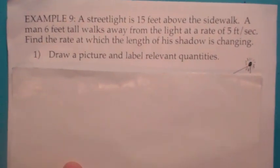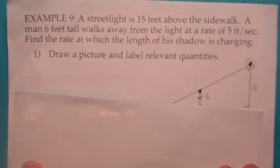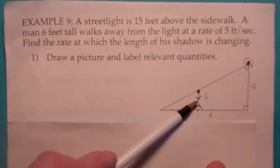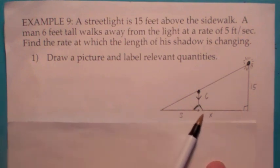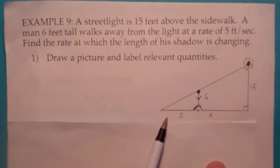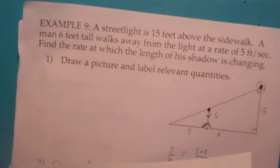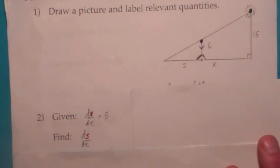Suppose we have a street light that's 15 feet above the sidewalk, and a 6 foot man walks away from the light. This would be the street light right over here, and this is the man that's 6 feet tall. If the man is walking away at a rate of 5 feet per second, let's let x be the distance from the man to the street light. So they're telling us that dx dt is 5. And what the problem asks for here is how fast is the length of the shadow changing? They want us to find ds dt. They're giving us that dx dt is 5, and they want us to find ds dt.